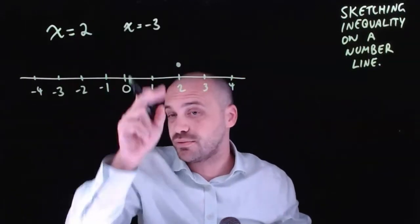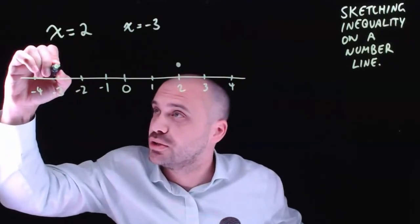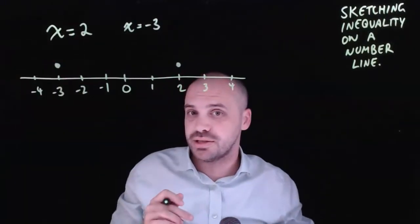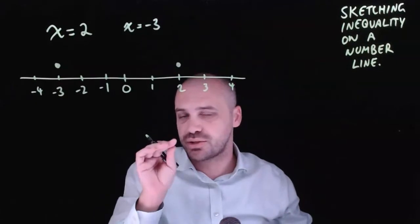x equals negative 3, if I want to sketch that, I just put a dot where x equals negative 3 is. But that's not what we came here for, we're here to talk about inequalities.